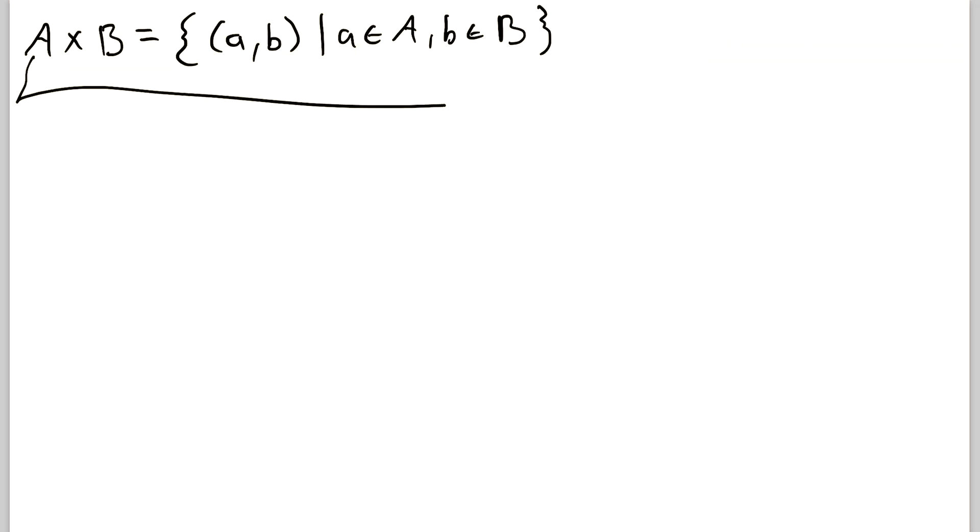So here we've got our beautiful definition of the Cartesian product in set builder notation. The Cartesian product of A and B is the set containing all ordered pairs (a,b) where the first element a is from the set A and the second element b is from the set B.